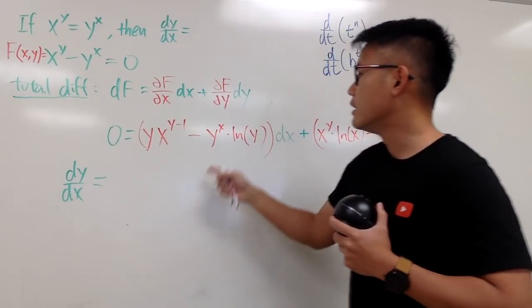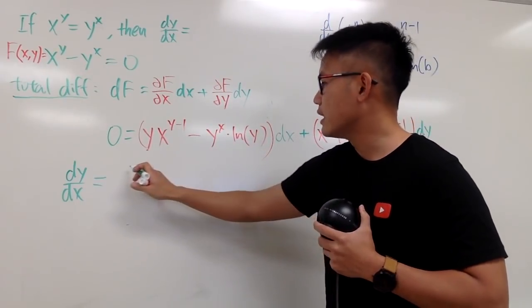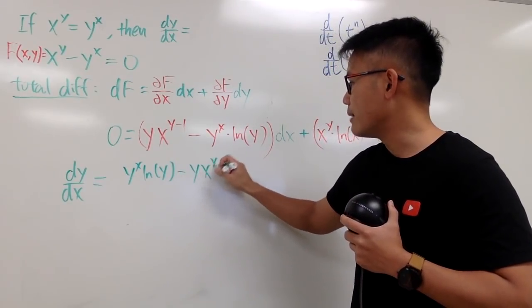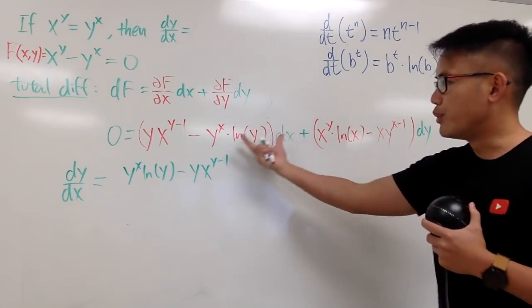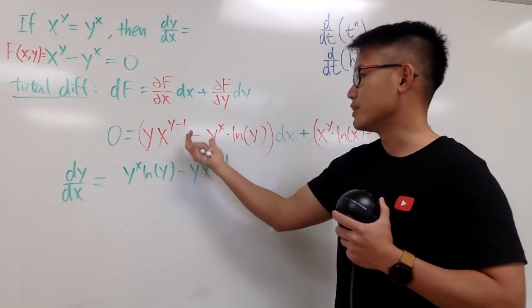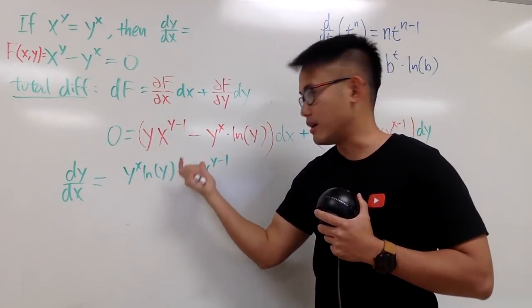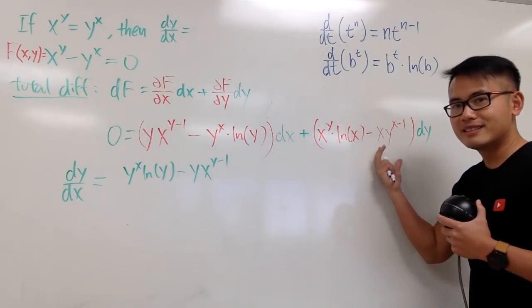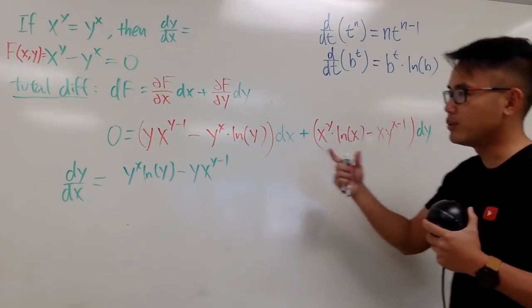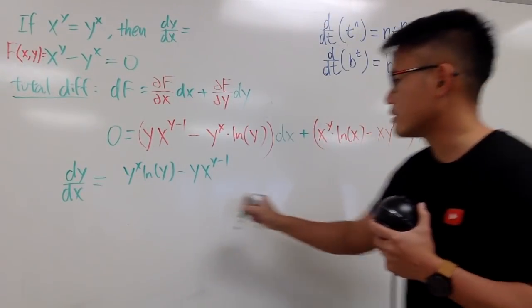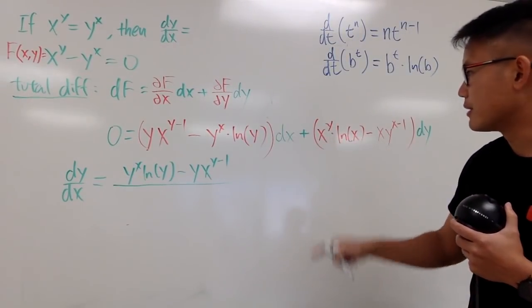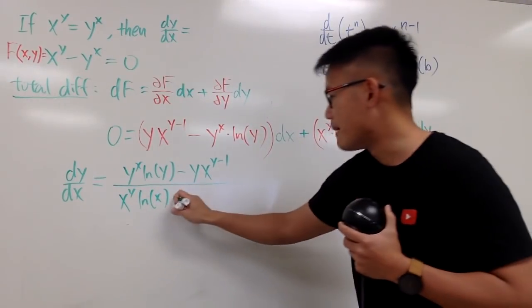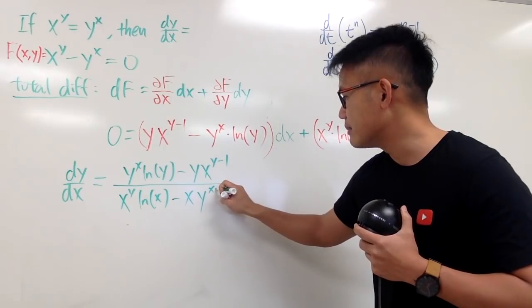You bring this to the other, and you are going to change the sign, because it's a minus of that. So you will get y to the x power ln y, and then minus x times y to the y minus 1, like that. So you bring this to the other side, and then once again, you just change the sign. I just switch the order of that. And I will divide this on both sides. I divide this because I have this dy. I need to have the dy on the top, so I will divide this on both sides. So this is on the bottom. It becomes x to the y's power ln x, and then minus x times y to the x minus 1.